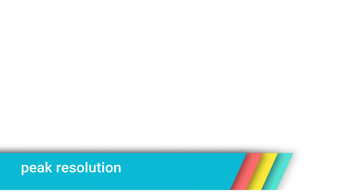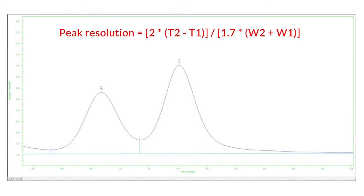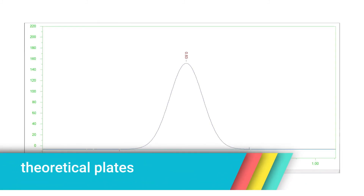Peak resolution measurements. These measurements provide a measure of column performance that considers both the peak width and the peak retention time. The resolution of a peak is a measure of its separation from the previous peak compared to the width of these peaks. The formula for resolution is: 2 times (t2 minus t1) divided by 1.7 times (w2 plus w1), where t2 is the retention time of the current peak, t1 is the retention time of the previous peak, w2 is the width of the current peak, and w1 is the width of the previous peak. A value greater than 2.0 indicates good separation; a value less than 1.5 indicates marginal separation.